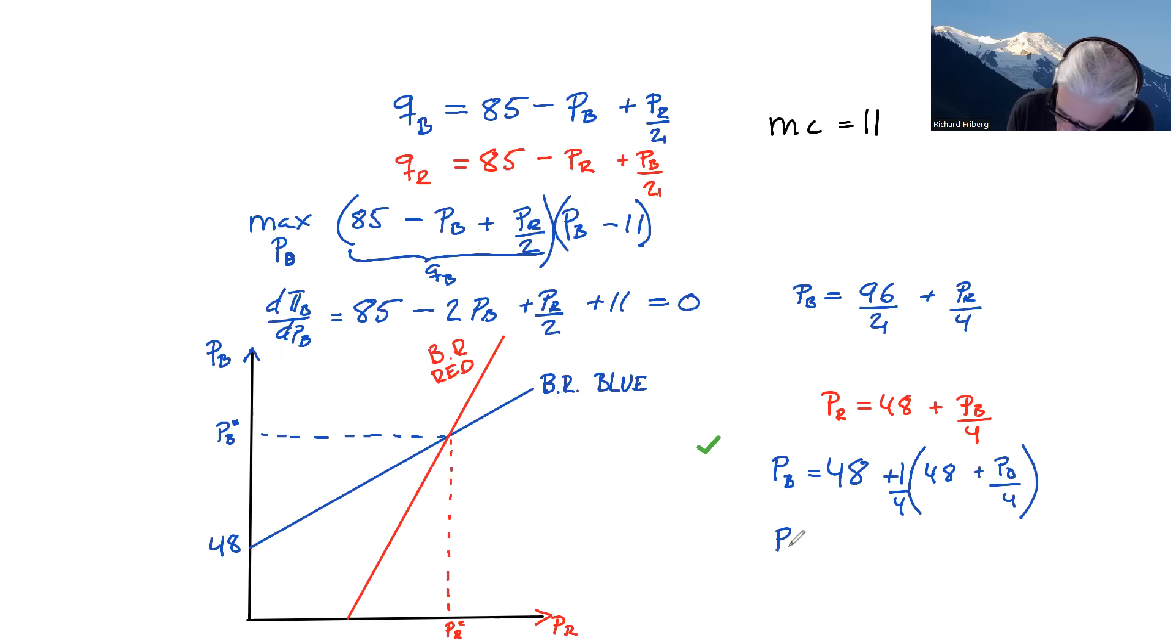Okay, so that's PB equals to 48 plus 48 divided by 4, so 12 plus, and here PB divided by 4 multiplied by one-fourth, so divided by 16. So move PB here over to this side. So we have PB times 1 minus 1 over 16 becomes minus because we're shifting sides. And that's equal to 60, which is 48 plus 12.